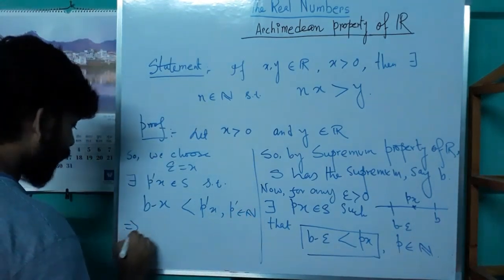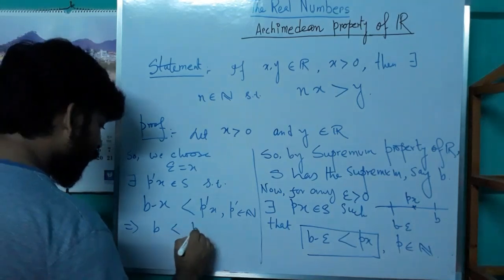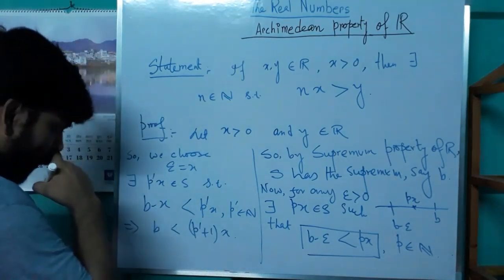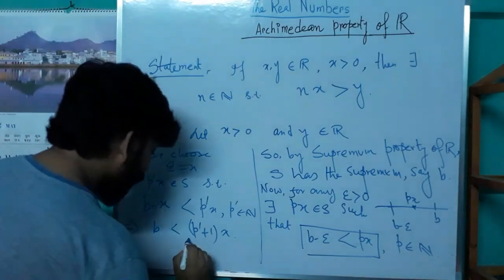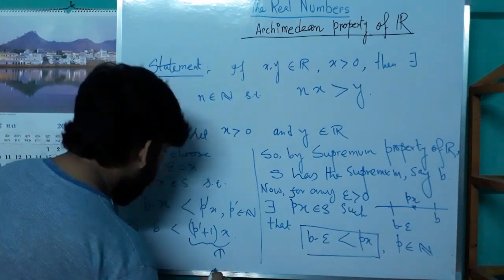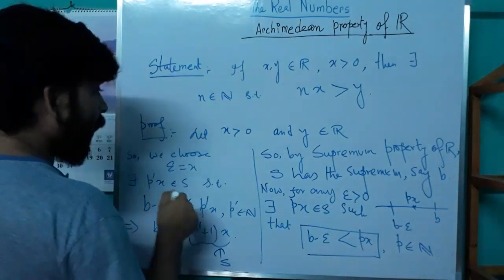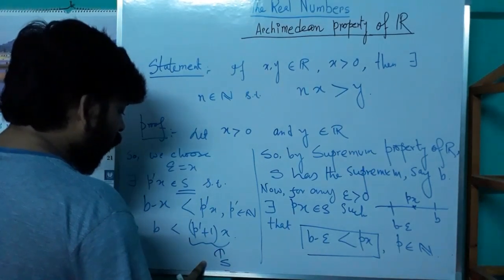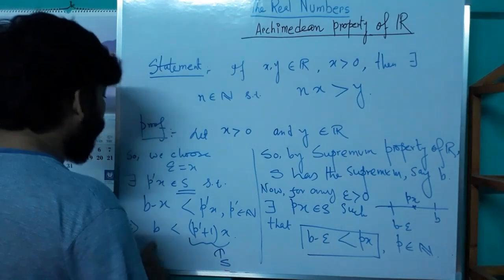This implies B < (P+1)·x. So we have seen that (P+1)·x is an element of S, yet it is bigger than the supremum of the set S.